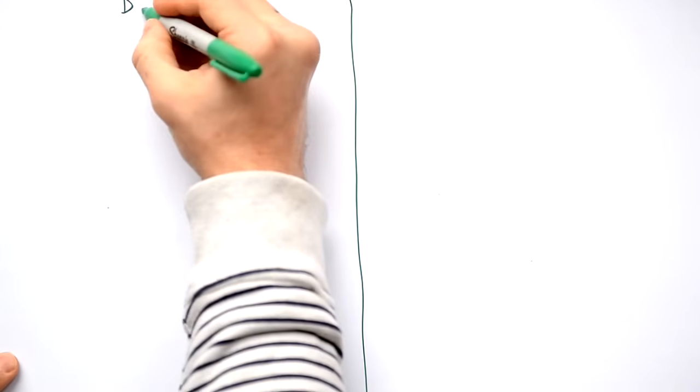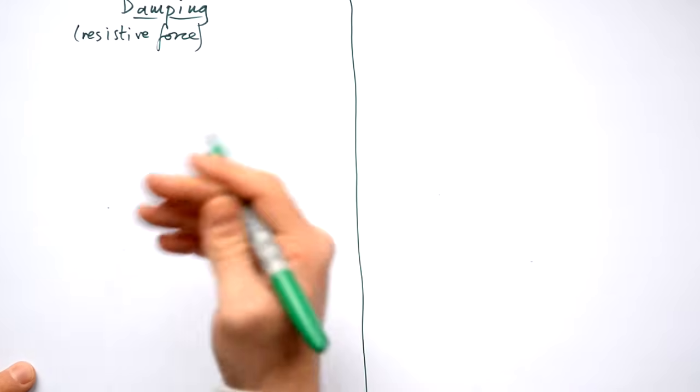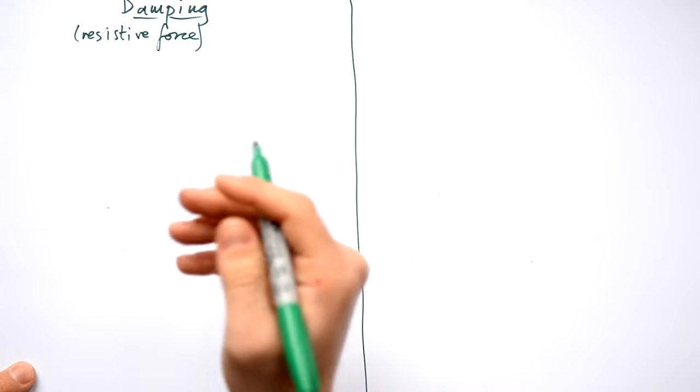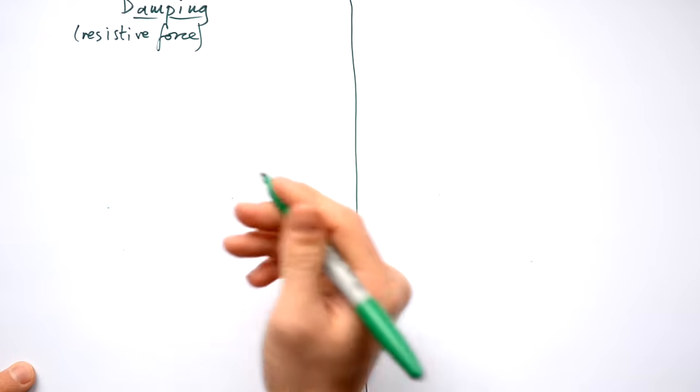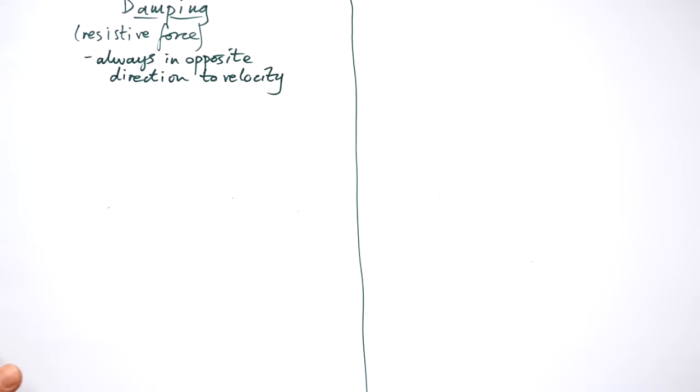On the left hand side we're going to look at damping. This is when we have a resistive force. Such a force always has to oppose the motion of the object that's undergoing SHM. So always in opposite direction to velocity.